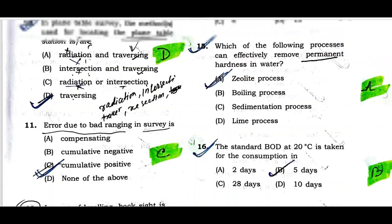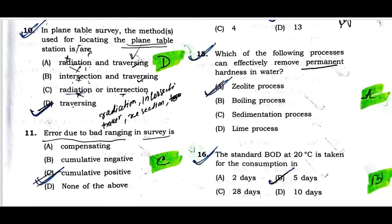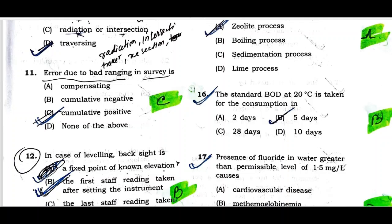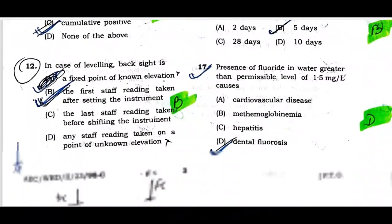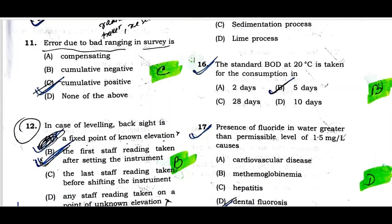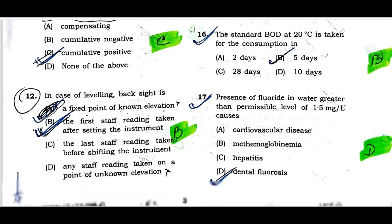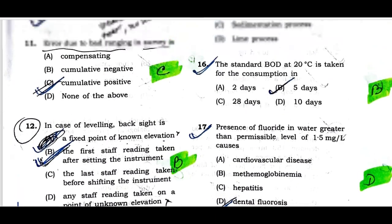Question number eleven: Error due to bad ranging in a survey is basically cumulative positive. Option C is the correct one. Question number twelve: In case of leveling, back sight is the first staff reading taken after setting the instrument. Option B is the correct one.